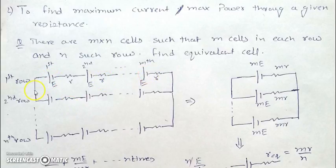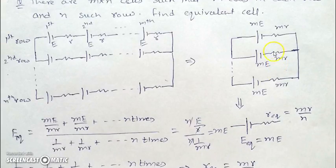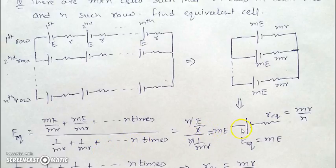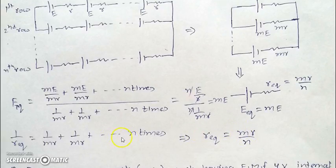With m cells in a row connected in series, their equivalent EMF is mE and equivalent resistance is mr. With n such rows in parallel, applying the parallel combination result gives: E_equivalent = mE and R_equivalent = mr/n.